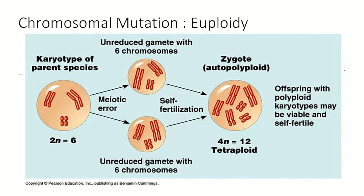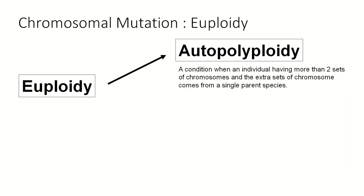For example, as you can see, this zygote comes from the self-fertilization of two unreduced gametes of this species. Since the gametes are not reduced, this zygote now contains extra sets of chromosomes, becoming 4n — having 4 sets of chromosomes — from initially just having 2 sets of chromosomes, or 2n. And as you can see, it only involves a single species, hence autopolyploidy, where 'auto' also refers to self.